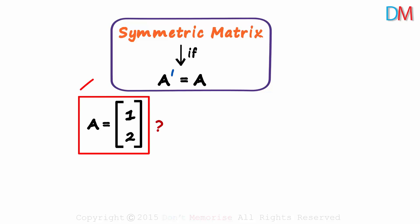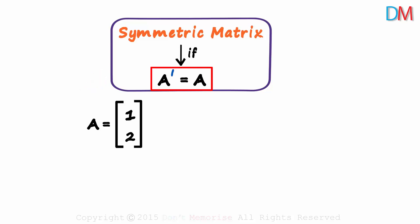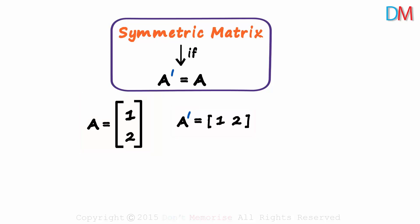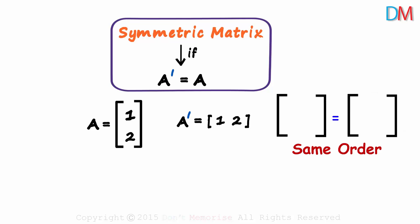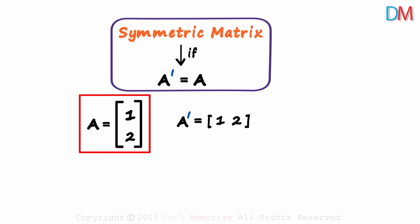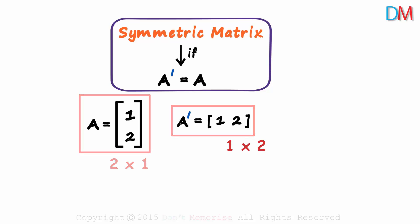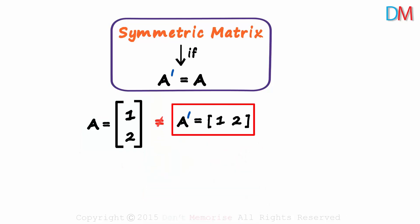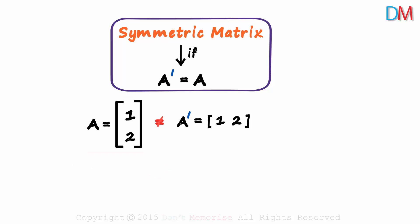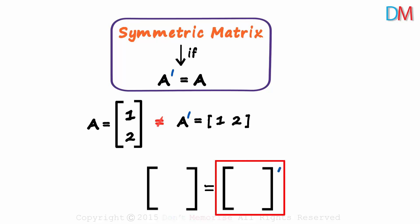Look at matrix A. Is it symmetric? It will be symmetric only if its transpose is equal to itself. We interchange the rows and columns to get A transpose. The first row became the first column and the second row became the second column. Two matrices are equal if they are of the same order and if their corresponding elements are equal. Here the orders are different — the order of A is 2 by 1 and that of A transpose is 1 by 2. They are not equal, so A is not a symmetric matrix.